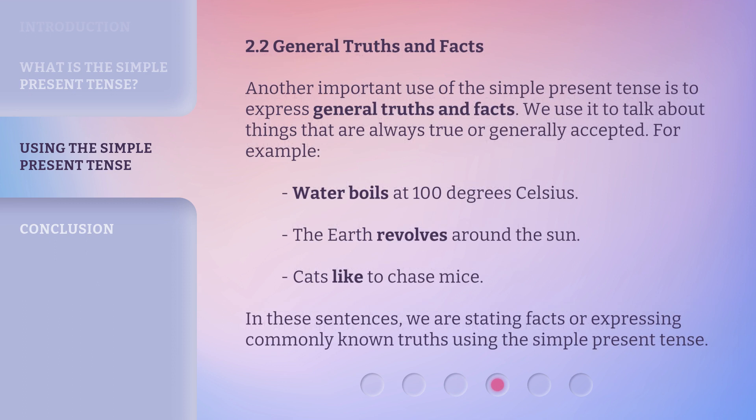2.2 General Truths and Facts. Another important use of the simple present tense is to express general truths and facts. We use it to talk about things that are always true or generally accepted. For example: Water boils at 100 degrees Celsius. The earth revolves around the sun. Cats like to chase mice. In these sentences, we are stating facts or expressing commonly known truths using the simple present tense.